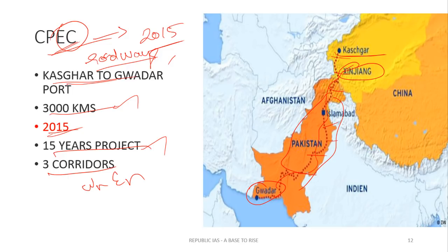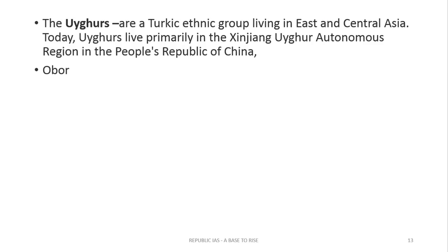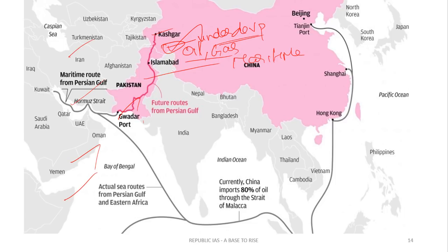The advantages of this project include development of Xinjiang province, which is an underdeveloped region. There are Uyghur militants who tend to dominate in Xinjiang province, so if CPEC develops Xinjiang province, that can help. Additionally, China has oil and natural gas reserves, and through CPEC with the help of Gwadar Port, they can engage in trade more efficiently.